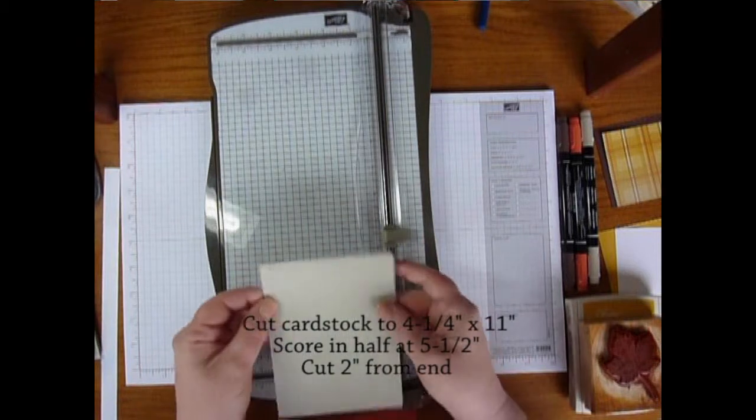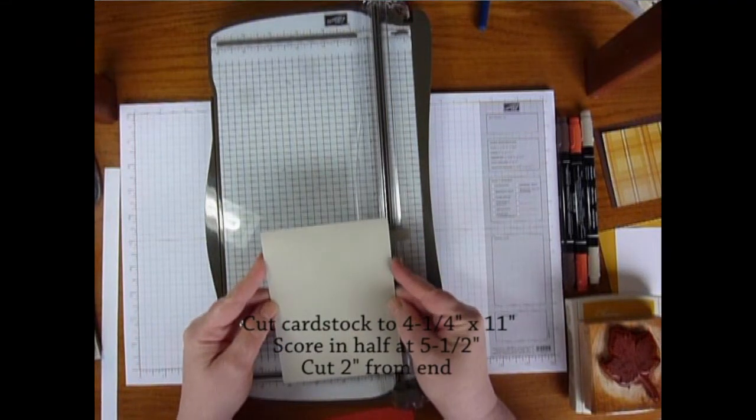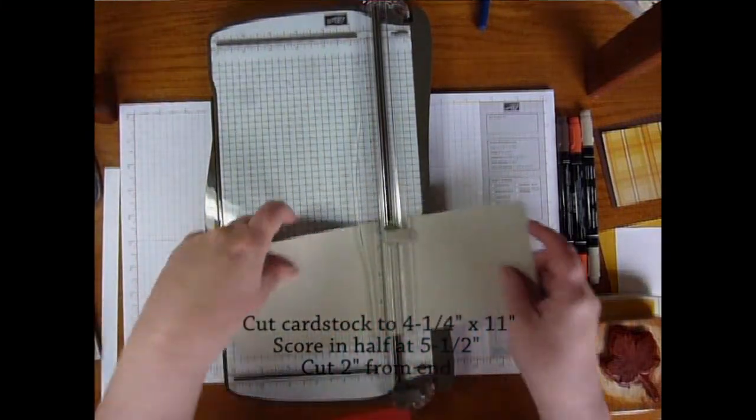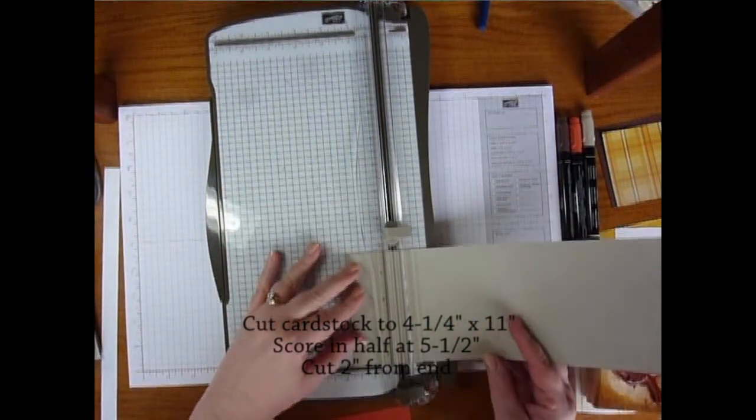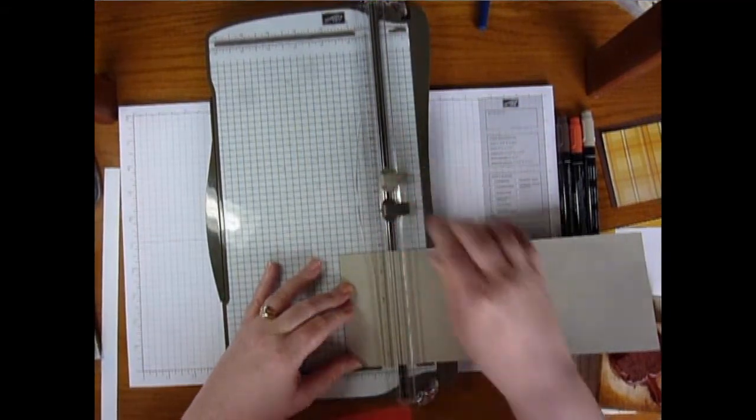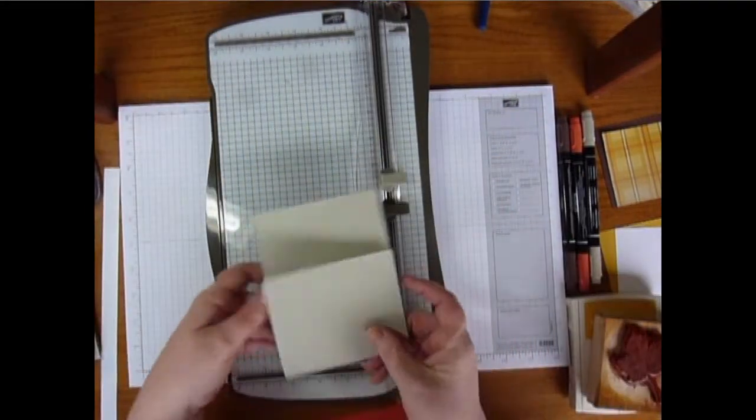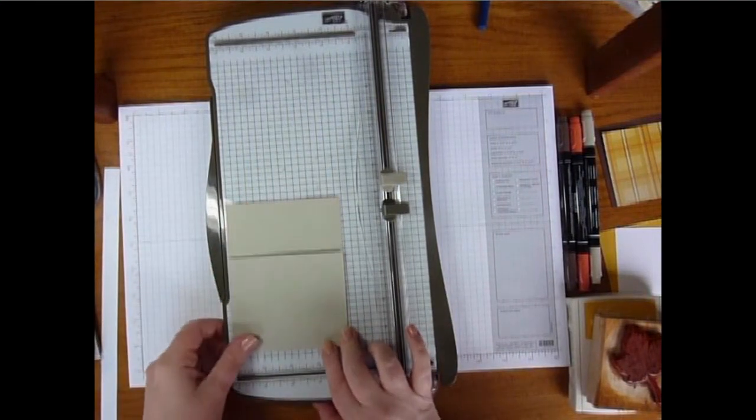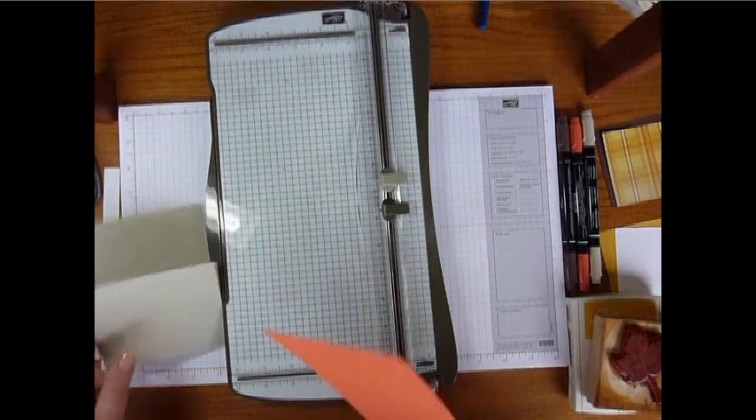You can fold it up and see it's just your normal quarter sheet of cardstock size, your traditional card size. But what we're going to do is cut 2 inches off right here. So now we've got that flap coming up from the bottom for the base card.